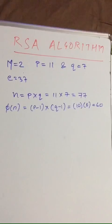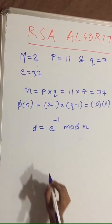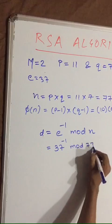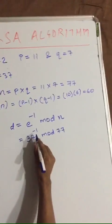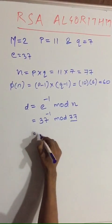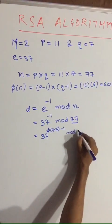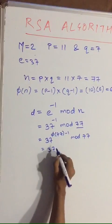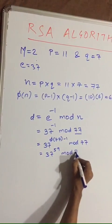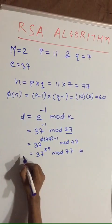Now we have to calculate d. d equals e inverse mod phi(n), which is 37 inverse mod 60. Since 37 is not composite relative to phi(n), we calculate using Euler's theorem: 37 raised to phi(77) minus 1, mod 77, which gives us 37 raised to 59 mod 77. Calculating this, you will get d equal to 13.